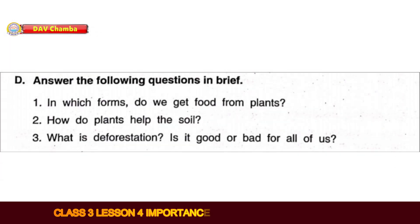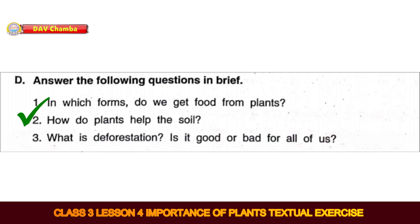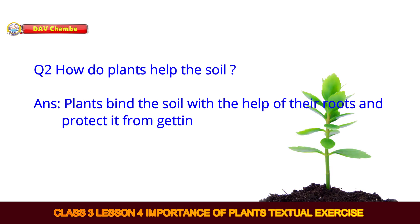Next, Part D — Answer these questions in brief. Question 1: In what forms do we get food from plants? The answer is: We get food from plants in the form of fruits, vegetables, pulses and grains. Question 2: How do plants help the soil? Plants bind the soil with the help of their roots and protect it from getting washed away.